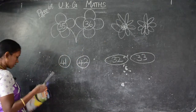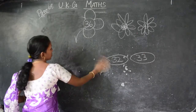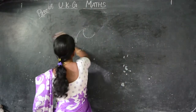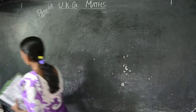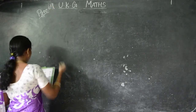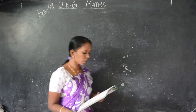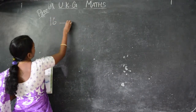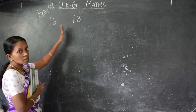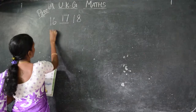Next we are going to see page number 69. Take page number 69. Fill in the circle with the numbers that come in between. Now we are going to see: 16 dash 18. What will come after 16? 17. Before 18, 17. So the between number is 17. Like that we have to complete this page.